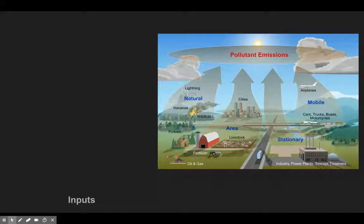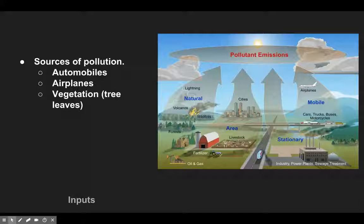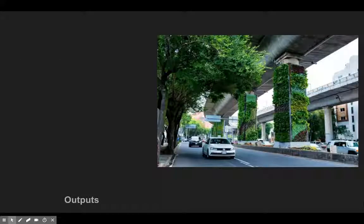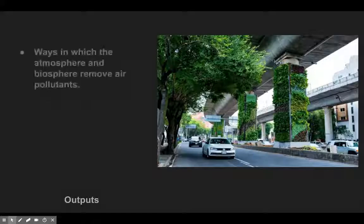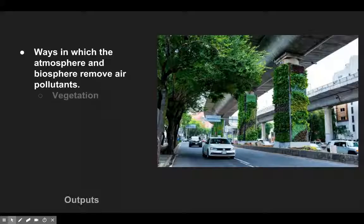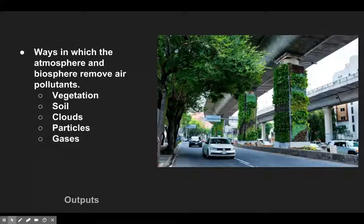Just like any system there are things going in and things going out, and sources of pollution do not originate from just one location, similar to when we talked about water pollution. We get pollution from transportation — automobiles, planes, any sort of burning of fossil fuel gives you an input. For outputs, Mexico City put plants along highway pillars called Valle Verde, the green road, and noticed a drop in air pollution. Vegetation does a great job, and so does soil, clouds, and some particles and gases.